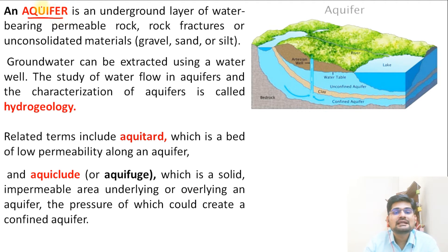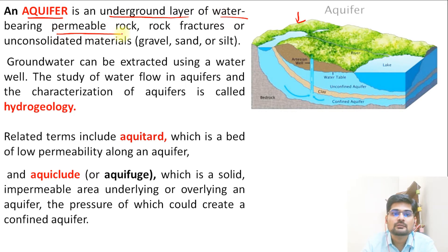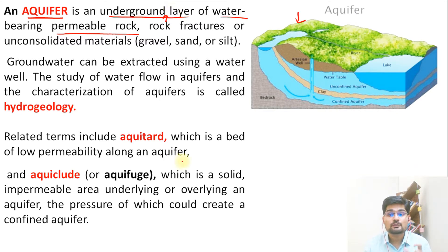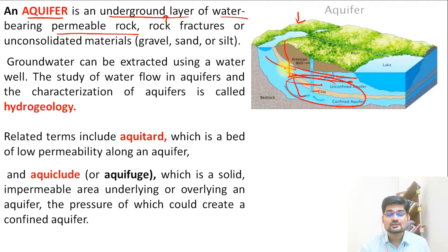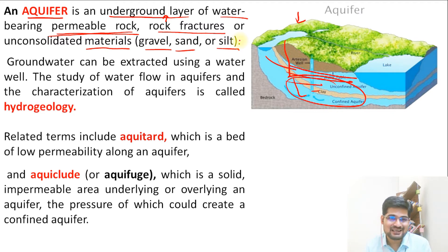The first important term is aquifer. Simplistically speaking, an aquifer is an underground layer of water-bearing permeable rock. It is not just an underground layer of water — the layer of rock itself is important, and it is permeable in nature, permitting water to go inside and stay there. Think of it like a water tank made of permeable rock. It includes rock fractures or unconsolidated materials like gravel, sand, and silt.